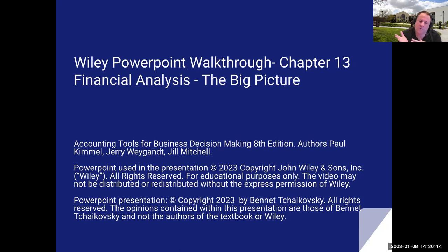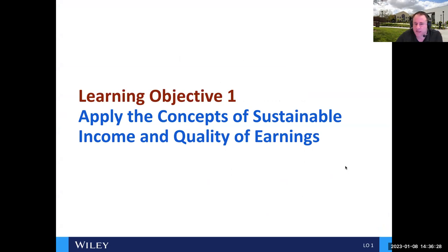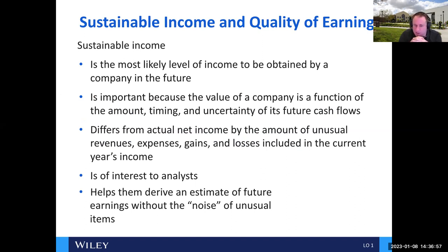Before we get going, I'm not going to change substantially what they or Diane Tanner have done in terms of making this presentation. They typically have these listed out by various learning objectives. Sustainability of income and quality of earnings: sustainable income is the most likely level of income to be obtained by a company in the future. It differs from actual net income by the amount of unusual revenues, gains, and losses included in the current year's income. It helps analysts drive an estimate of future earnings without the noise of unusual items.